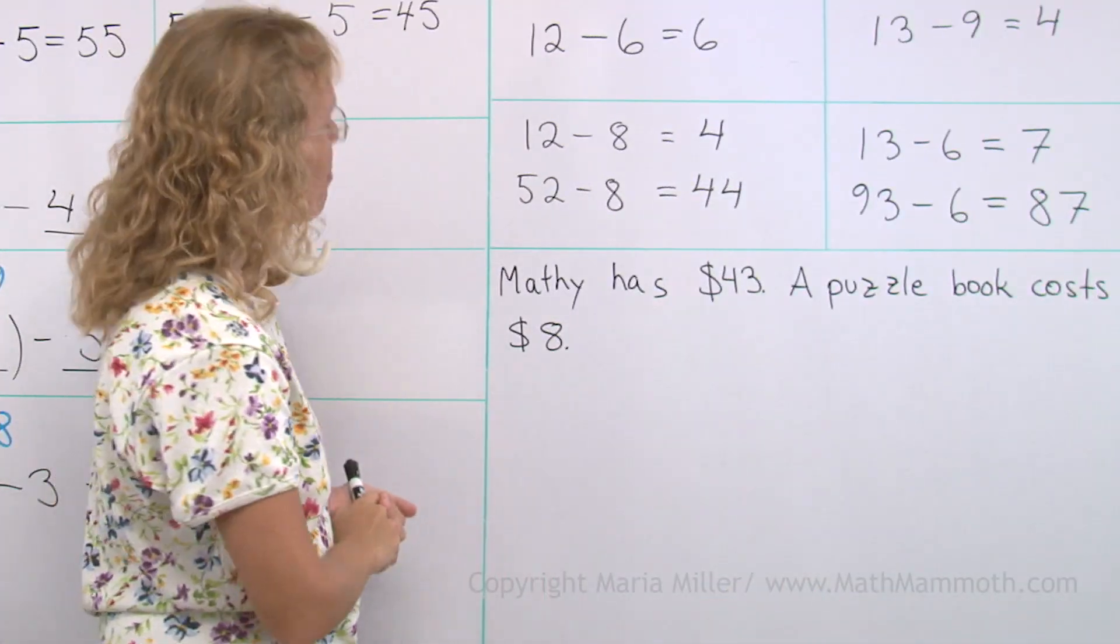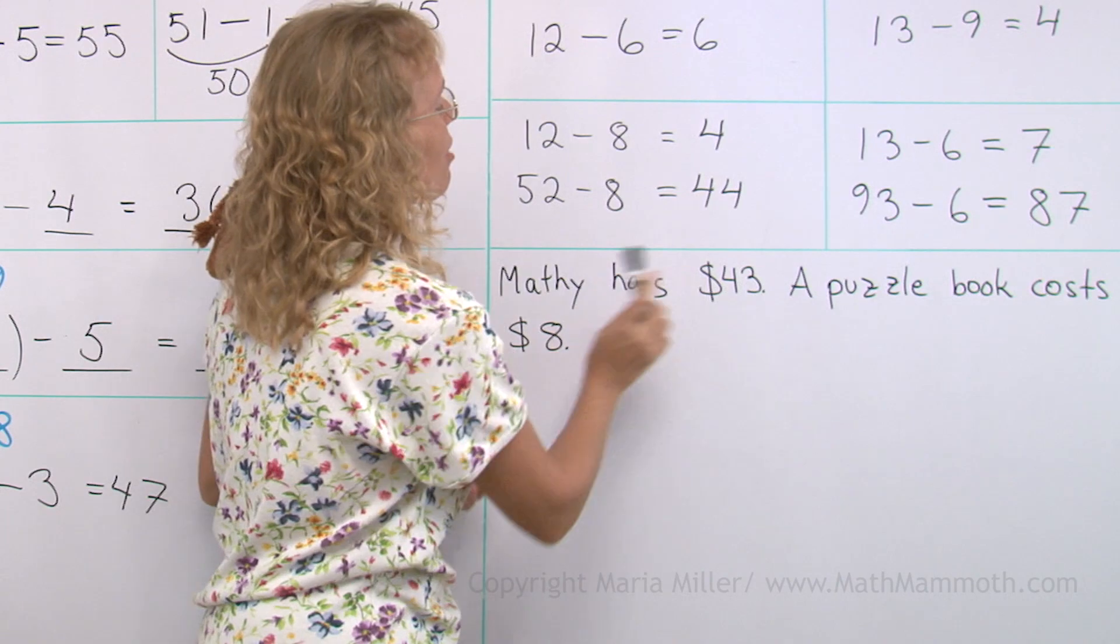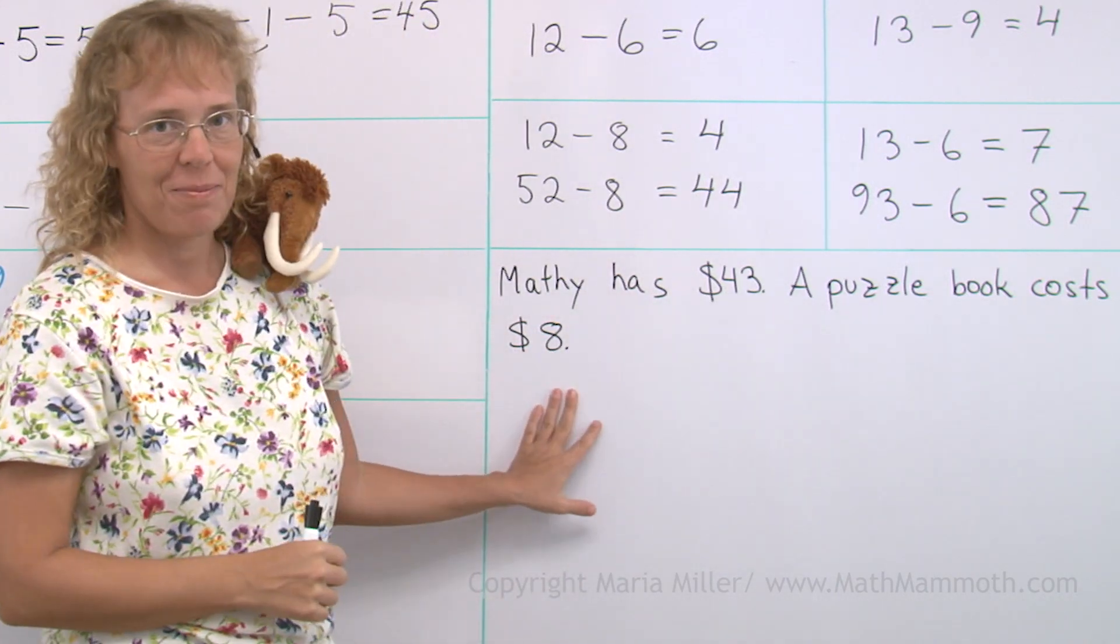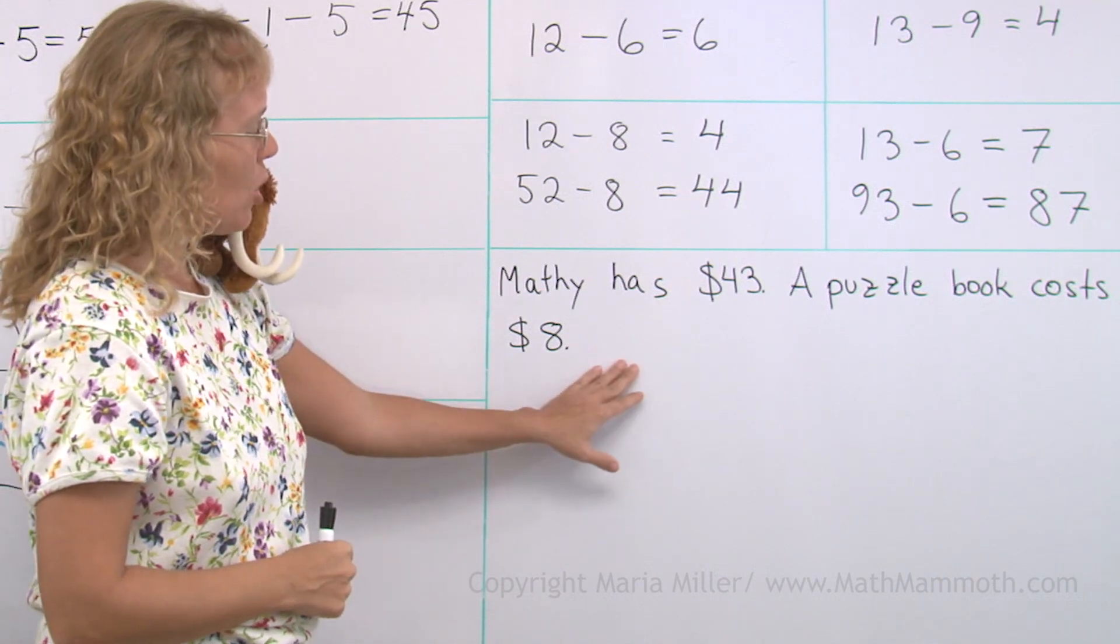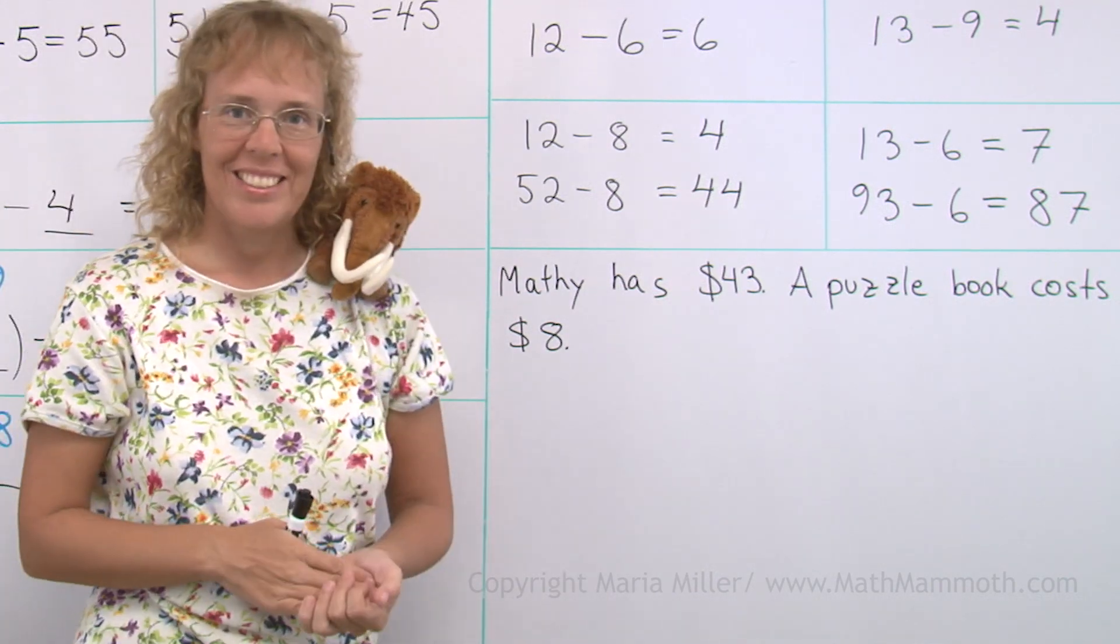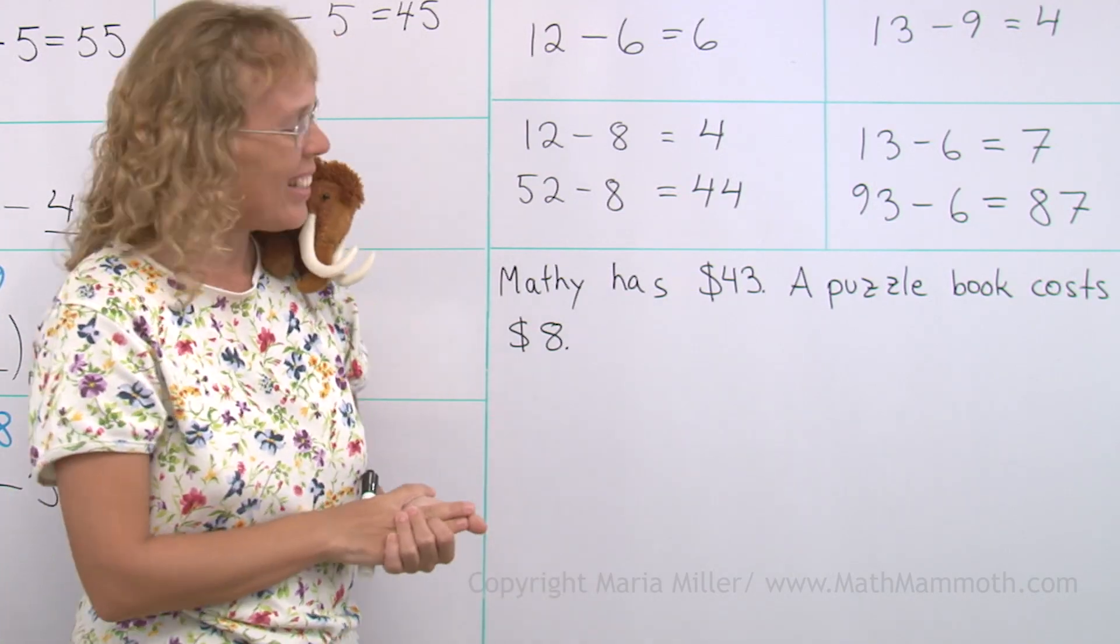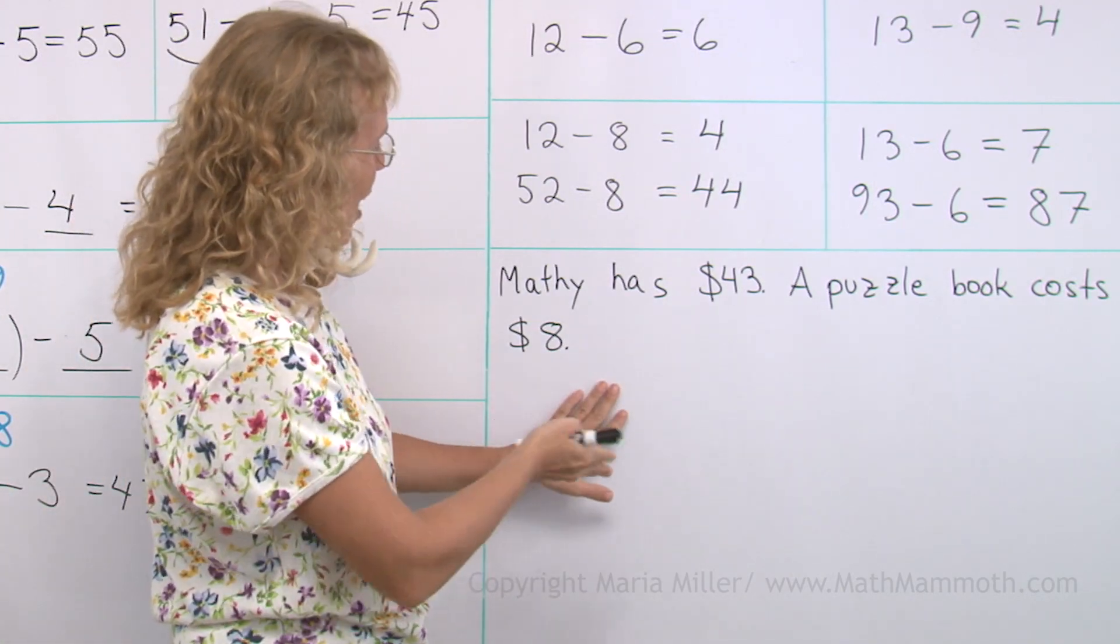Lastly, we have a word problem. Mathie has $43. A puzzle book costs $8. And so, what will we ask? Now you can make up a question for this word problem.